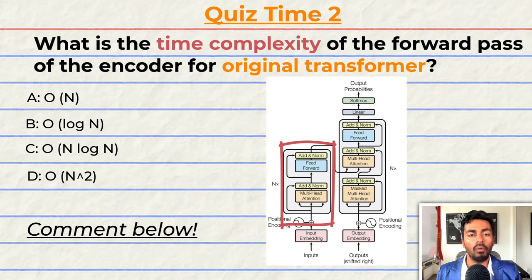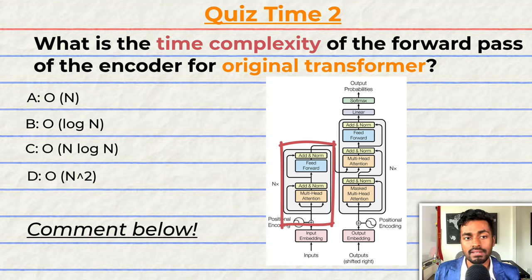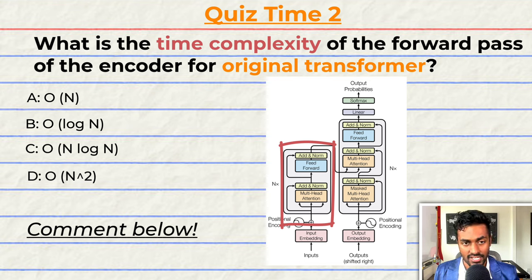Quiz time! What is the time complexity of the forward pass of the encoder for the original transformer with respect to the input sequence length n? A: O(n)? B: O(log n)? C: O(n log n)? Or D: O(n²)? Comment your answer down below and let's have a discussion. That's going to do it for quiz 2 and pass 2 of this explanation, but keep paying attention because I will be back to quiz you.